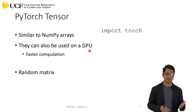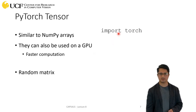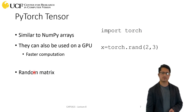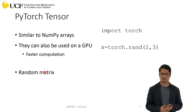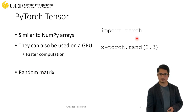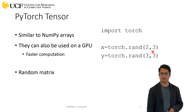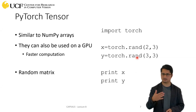Let's understand what variables are available in PyTorch, how they relate to NumPy, and how they can be useful. First, you import the torch library — that's standard. If you want to create a random matrix, you call torch.rand and specify the shape — for example, 2x3 gives you a 2x3 matrix, and 3x3 gives you a 3x3 matrix. You can print these values to see what's stored.